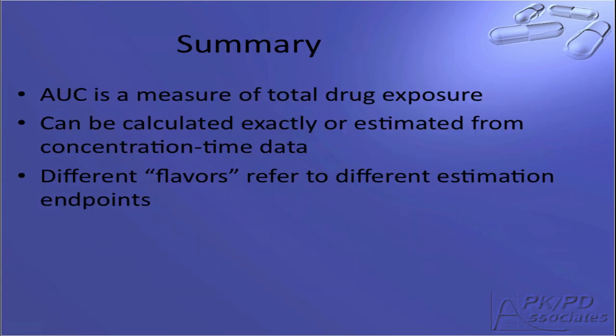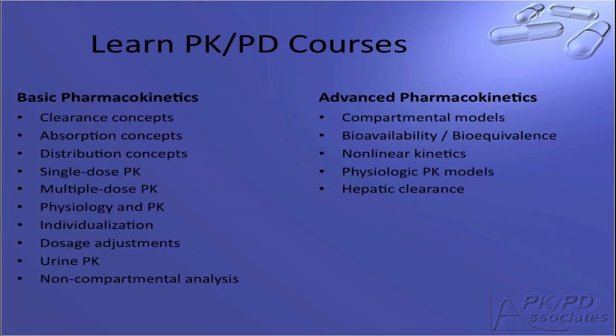In summary, AUC is a measure of total drug exposure and can be calculated exactly if we have the equation, or it can be estimated from the concentration time data. We reviewed how to calculate AUC areas, and then described the different AUC values that are commonly requested in pharmaceutical development. For more training videos, please visit us at www.learnpkpd.com. Thank you!